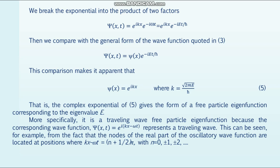We break the exponential into the product of two factors, then compare with the general form of the wave function quoted in formula number 3. This comparison makes it apparent (formula 5) that the complex exponential gives the form of a free particle eigenfunction corresponding to the eigenvalue E. More specifically, it is a traveling wave free particle eigenfunction, because the corresponding wave function ψ(x,t) = e^{i(kx − ωt)} represents a traveling wave.